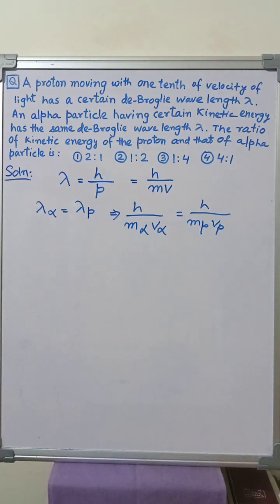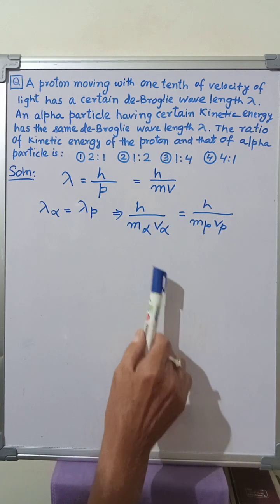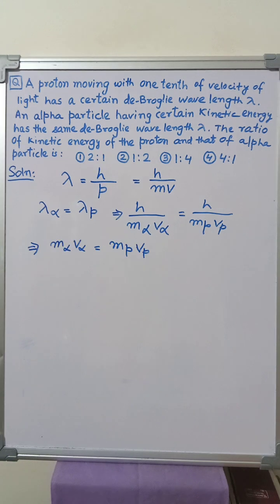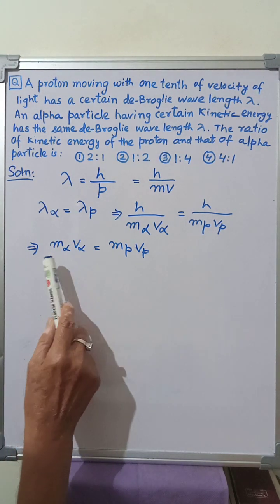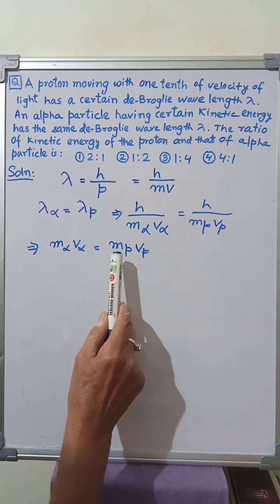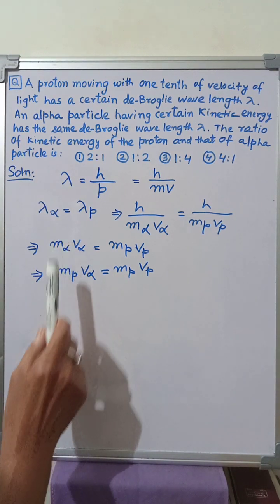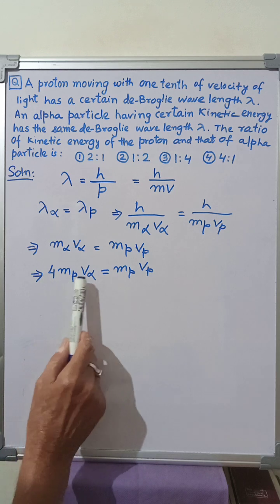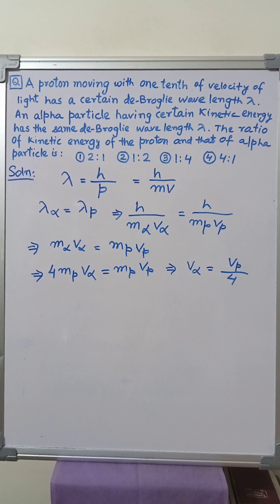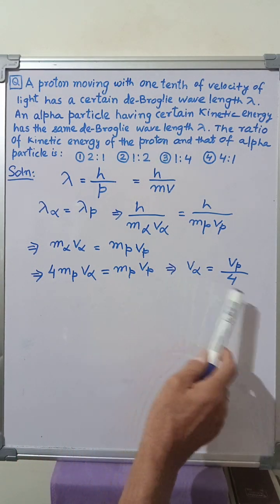Cancelling h from both sides of the equation, we get m_alpha v_alpha equals m_p times v_p. Now the mass of the alpha particle is four times the mass of the proton, so m_alpha equals 4 times m_p. Putting m_alpha equals 4m_p we get 4m_p times v_alpha equals m_p times v_p. Cancelling m_p from both sides of the equation we get v_alpha equals v_p by 4.